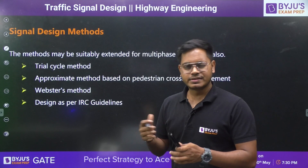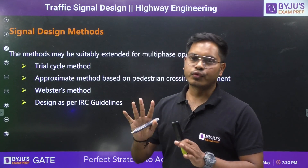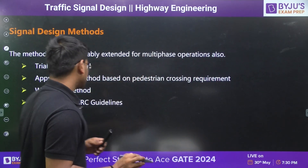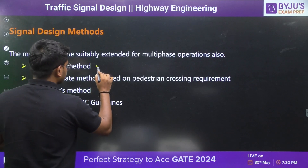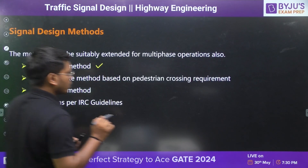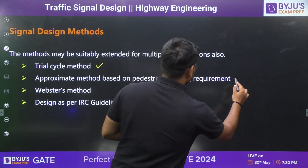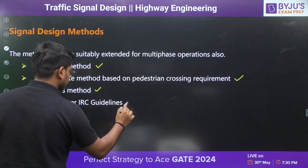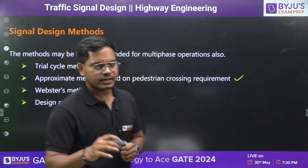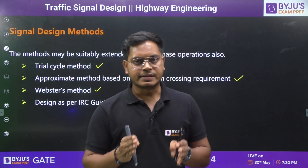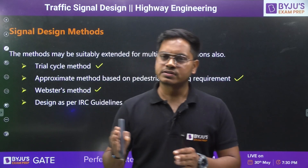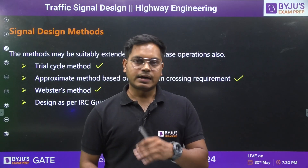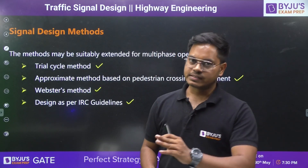In signal design method, we generally have four methods to design any signal. First, we have the trial cycle method. Then we have the approximate method. Then we have the Webster method. And then design as per the IRC guidelines, where IRC has given us certain guidelines we just need to follow to get a design of any traffic signal.